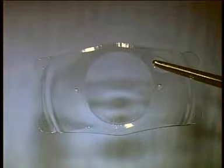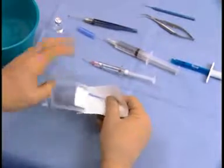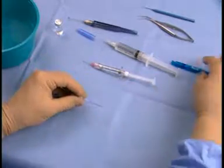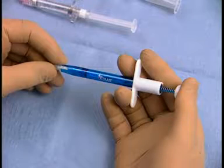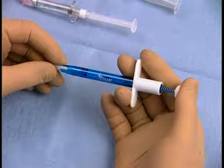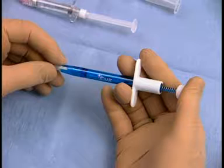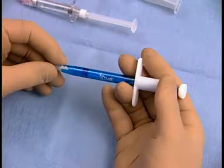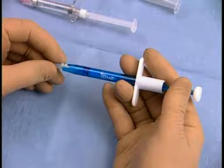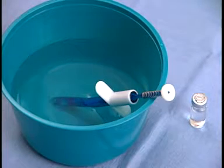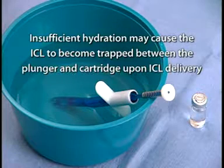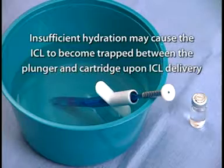The Star ICL is made from Collamer, a hydrophilic collagen copolymer. To begin, remove the foam-tipped plunger and holder from the package and insert it into the injector, base first. The vertical tab of the holder is not intended to be snap-locked into the notch of the injector. Advance the injector cap until the ball end of the plunger interlocks with the injector — a click can be felt and heard when the plunger is properly secured. Retract the injector plunger fully and remove the holder. Place the assembled foam-tipped plunger and injector into BSS, ensuring the tip is completely submerged. Hydration of the foam-tipped plunger is extremely important, as insufficient hydration may cause the ICL to become trapped between the plunger and cartridge upon ICL delivery.